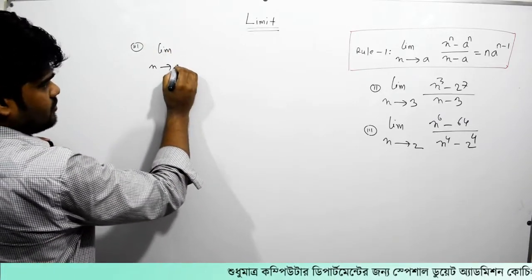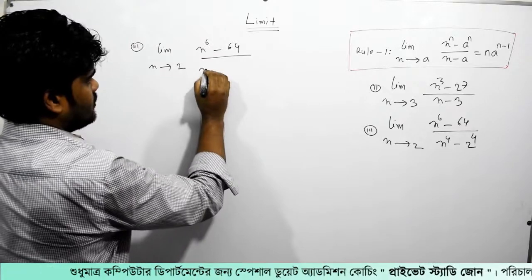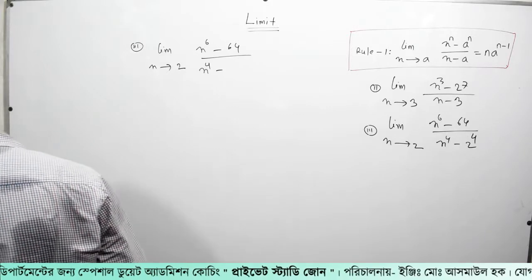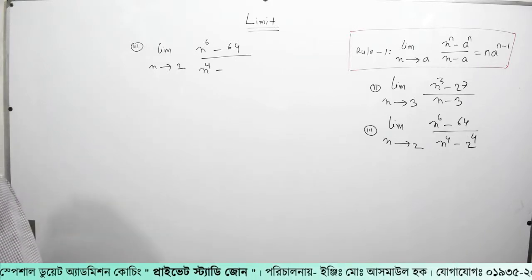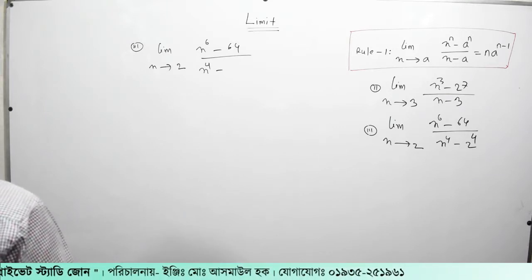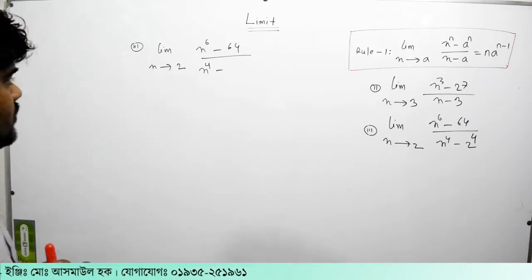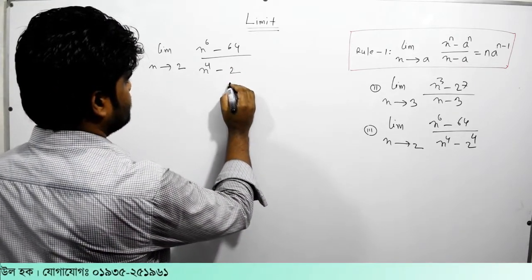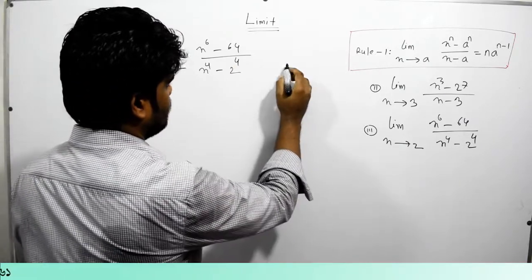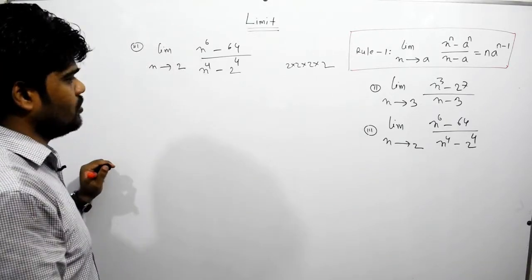Limit x extends to 2: x to the power 6 minus 64, divided by x to the power 4 minus 2 to the power 4. We work through: 2 to the power 4, minus 2 to the power 4, minus 4 plus 4 minus 6.